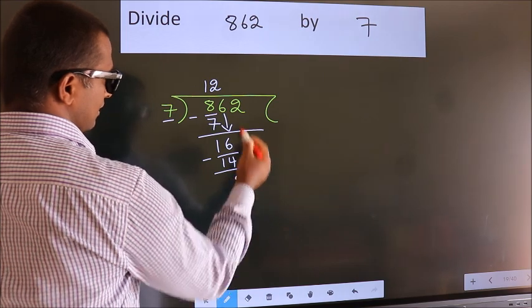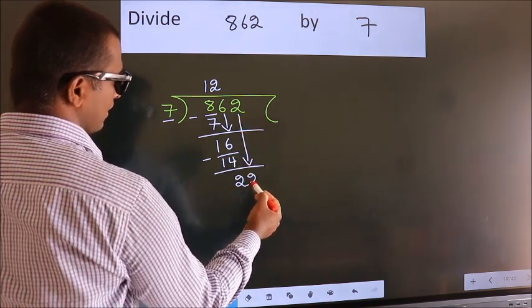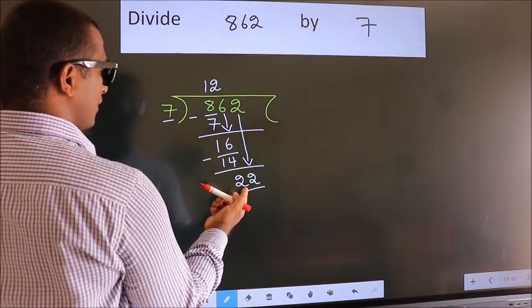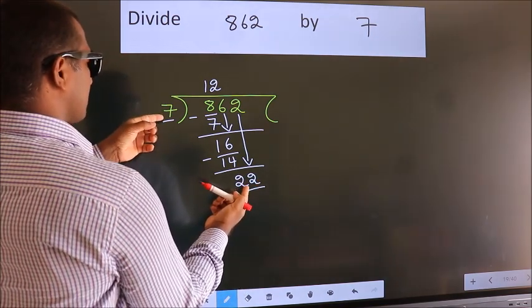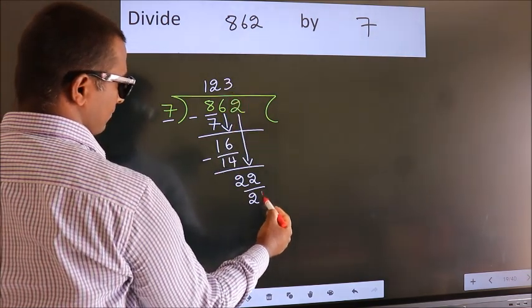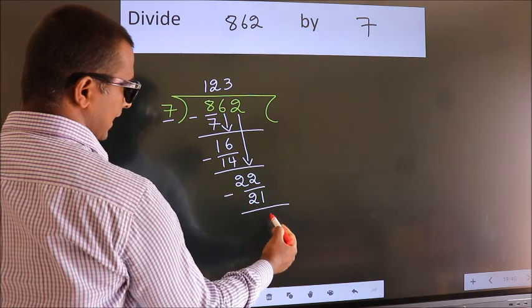After this, bring down the beside number. So 2 down, so 22. A number close to 22 in the 7 table is 7 threes, 21. Now we subtract. We get 1.